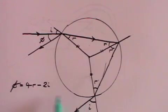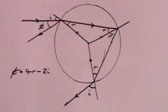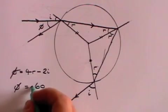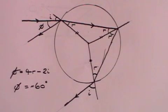And phi is equal to 4r minus 2i. And what you can show by applying Snell's law is that phi has a maximum angle. And that is approximately 60 degrees. It cannot get any bigger than that.